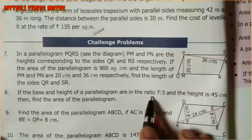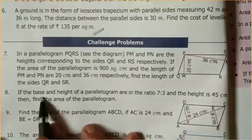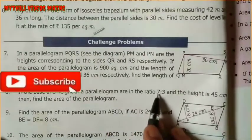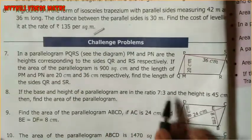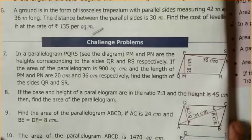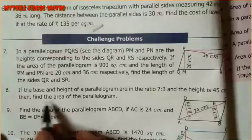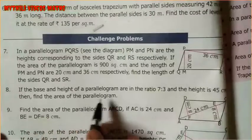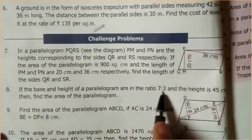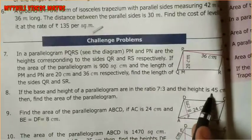The 8th sum: if the base and the height of a parallelogram are in the ratio 7 is to 3, and the height is 45 centimeters, find the area of the parallelogram.